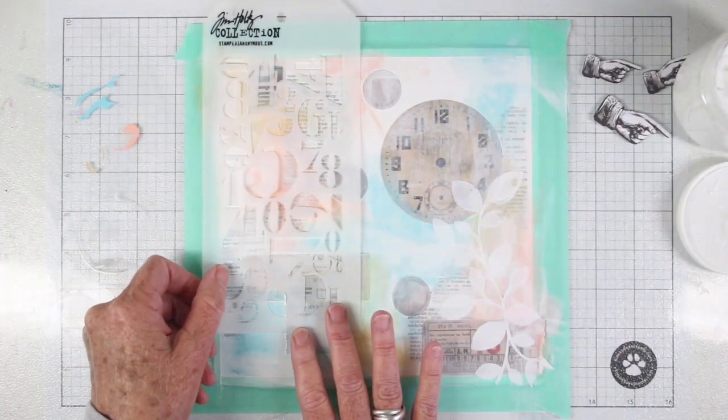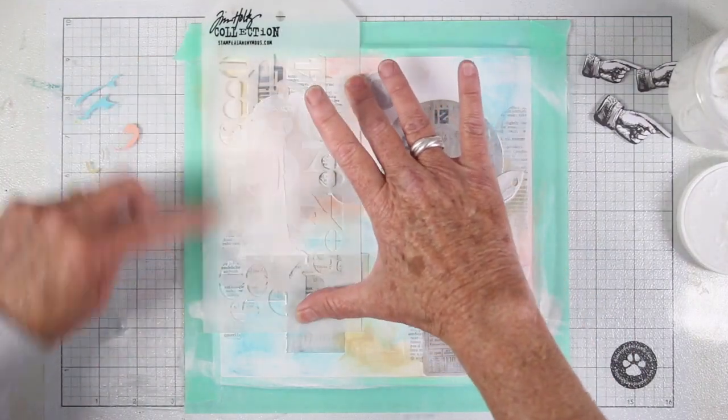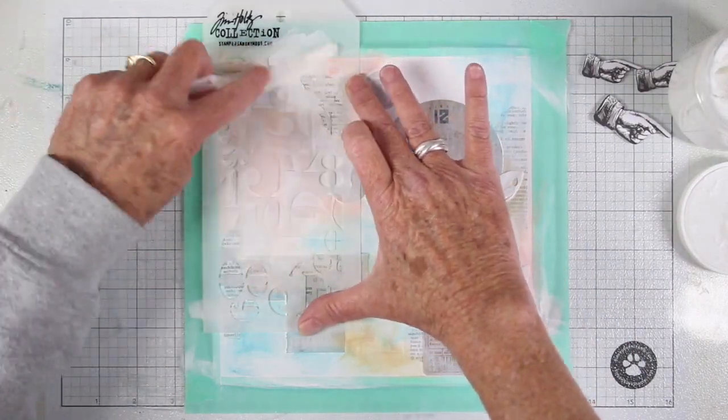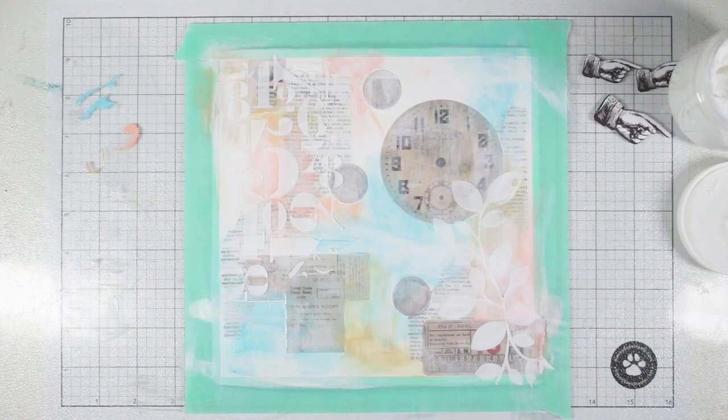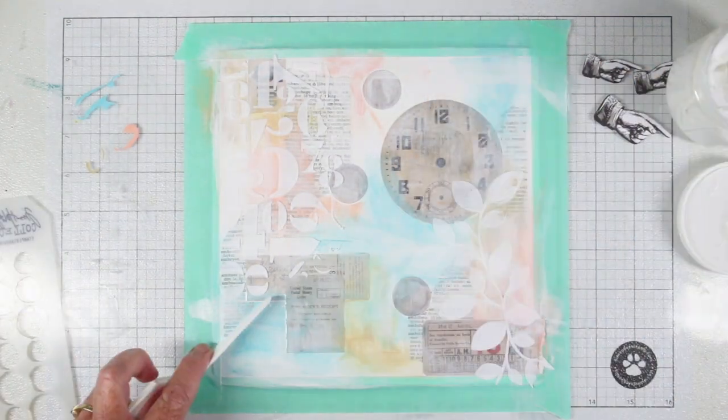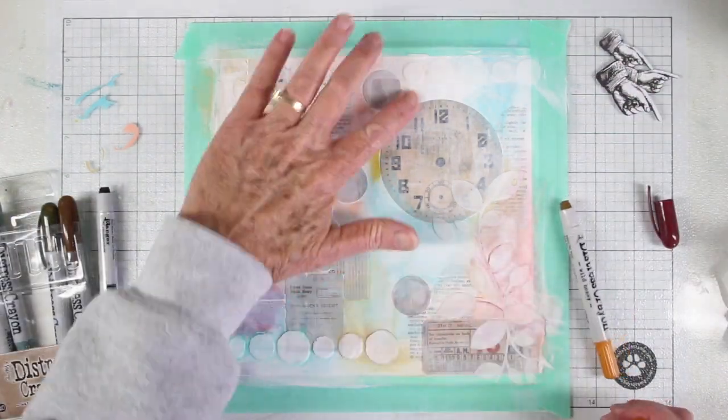The next stencil I'm using is Tim Holtz number stencil. Again, I'm using my light and fluffy paste, and I am just adding that to just a portion of the stencil—I'm not using the entire stencil. I'm going to let these dry and then I can go back in and add some circles.